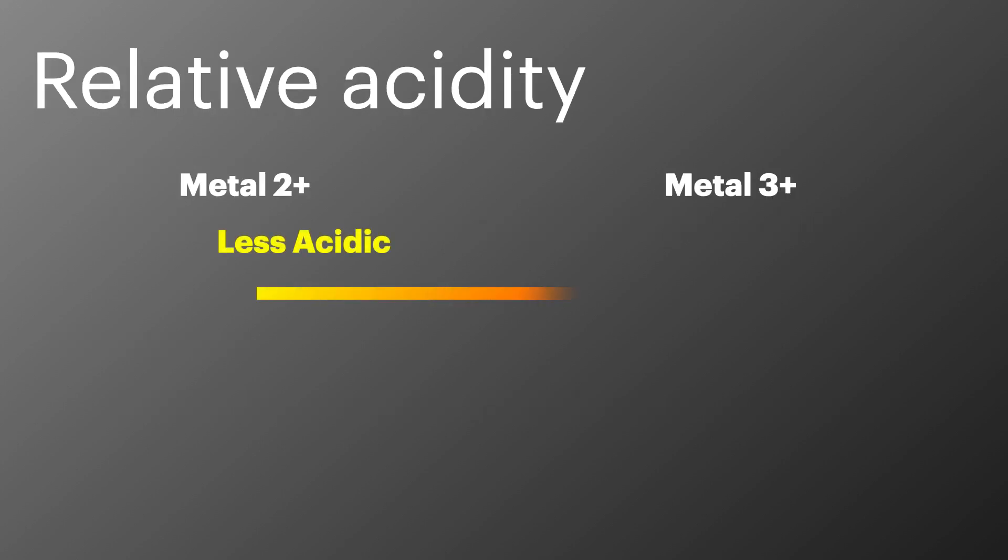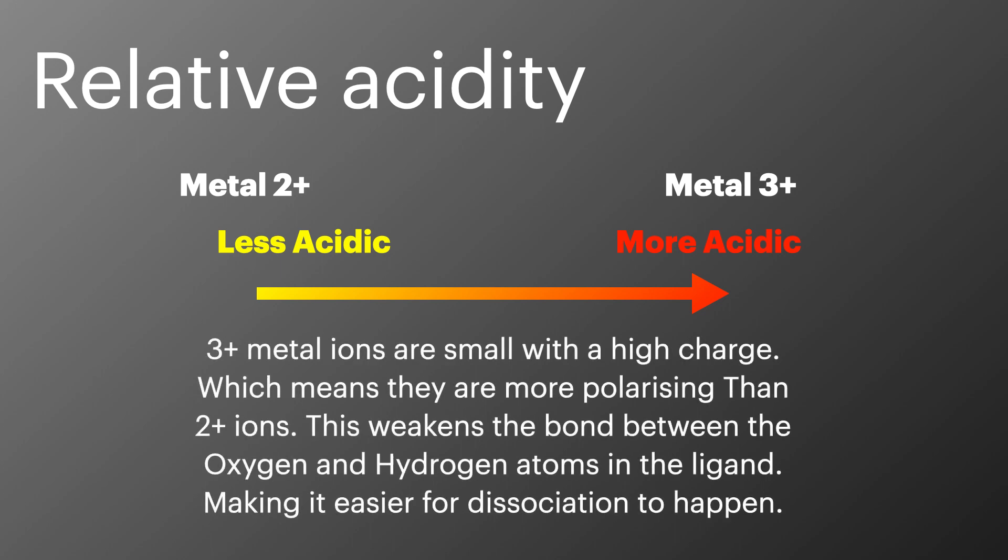There is a difference in acidity between the 2+ ions and the 3+ ions. Three plus metal ions are smaller than the 2+ ions and have a higher charge which means they're more polarizing on electrons in the bond. This draws the electrons in the coordinate bond closer to the metal ion which in turn weakens the bond between the oxygen and hydrogen atoms in the ligand. This weakening means that it's easier for the dissociation to happen so the equilibriums we just looked at lie further to the right for the 3+ ions.